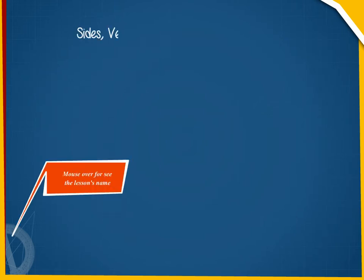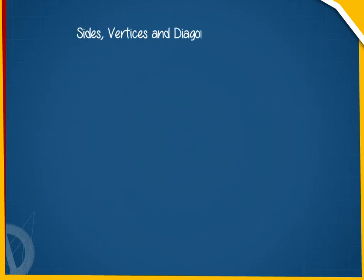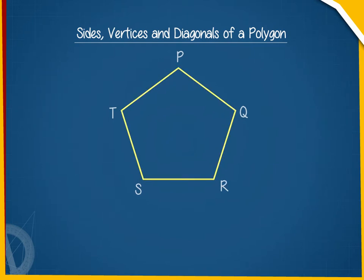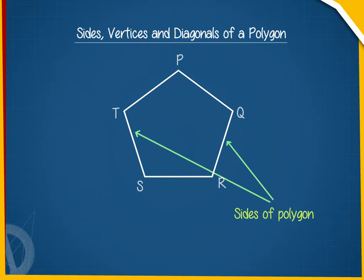Sides, vertices and diagonals of a polygon. Look at this shape PQRST. It is made up of five line segments which are called the sides of the polygon.